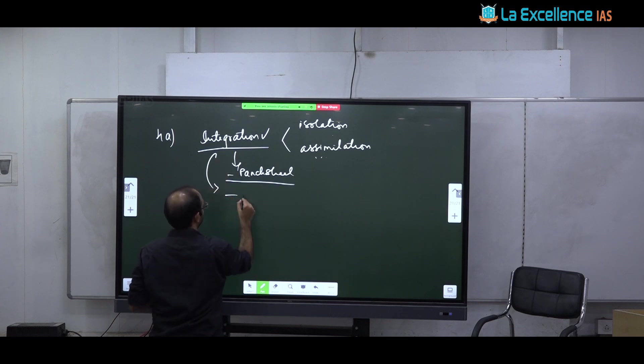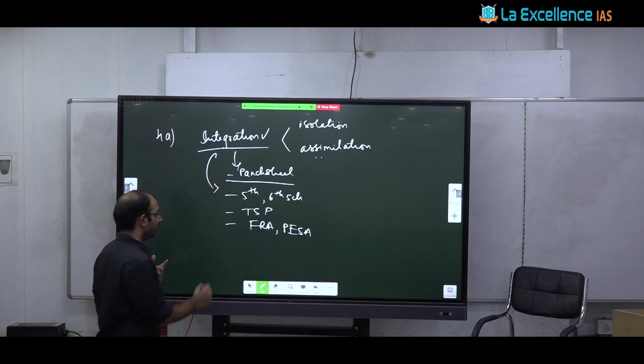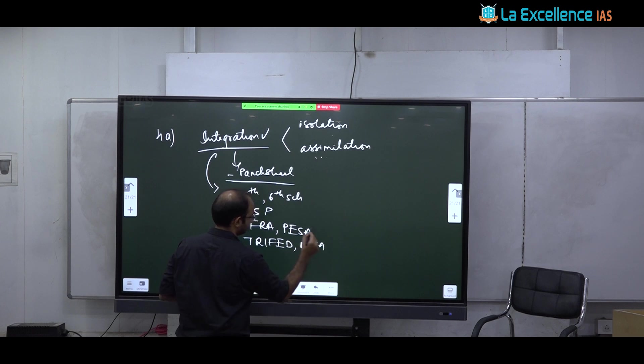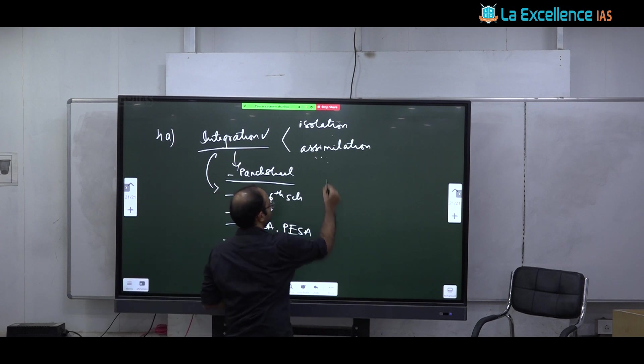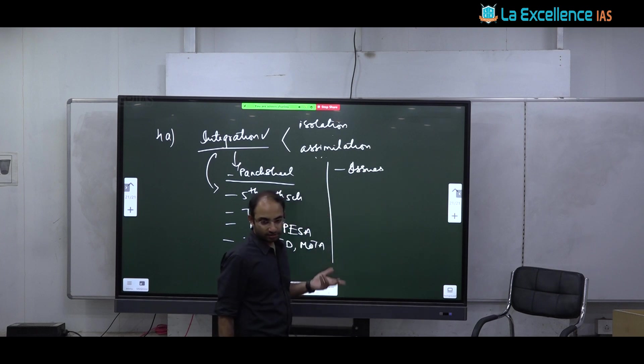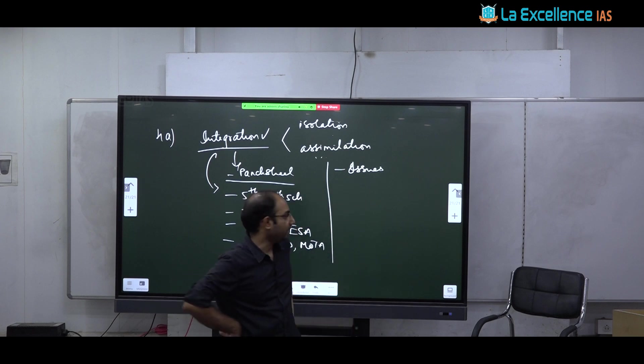So here you must begin with saying that the integration, the relationship is based on integration and not either isolation or assimilation. So the relationship between tribal people and nation state is on the principles of integration as enunciated in the tribal punch shield and briefly discuss punch shield. Then how punch shield? Where do you find integration measures? Integration is found in the provisions of fifth, sixth schedules. It is found in tribal sub plan. It is found in FRA PESA.